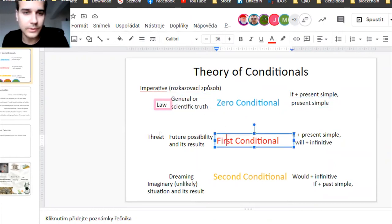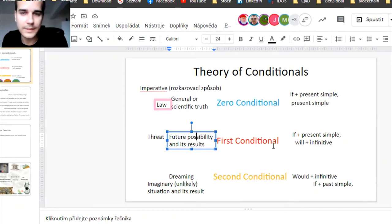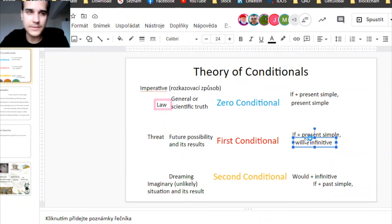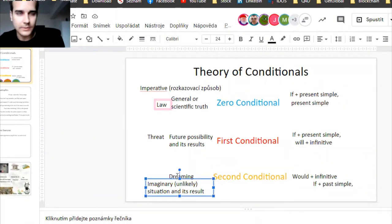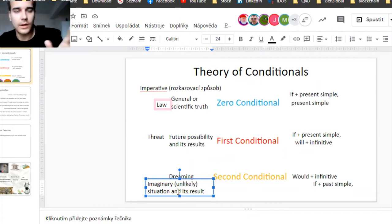Then we have the first conditional—threat, then future possibility and its result. If present simple, so if A happens, B will happen, and A can happen. There is some possibility this can happen. The second conditional I either dream, or I'm talking about some imaginary situation which cannot happen.